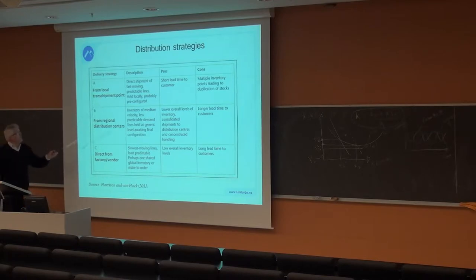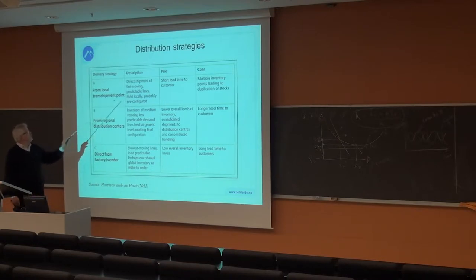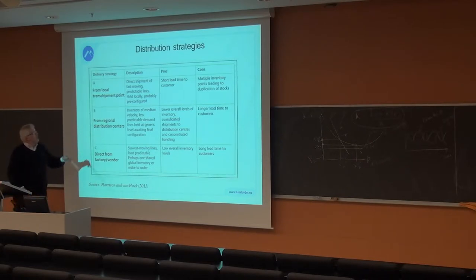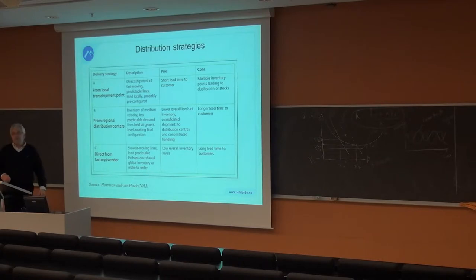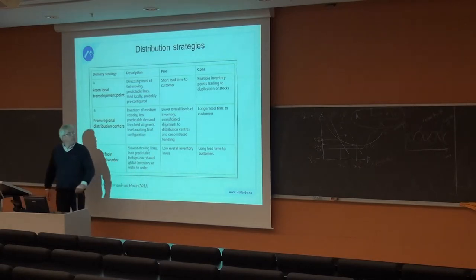From local transit shipment point, from regional distribution centers, or directly from factory vendor. From local transit shipment point, you have short lead times, direct transports, not many players in this distribution chain. Short lead time, but multiple inventory points may lead to duplication of stocks.